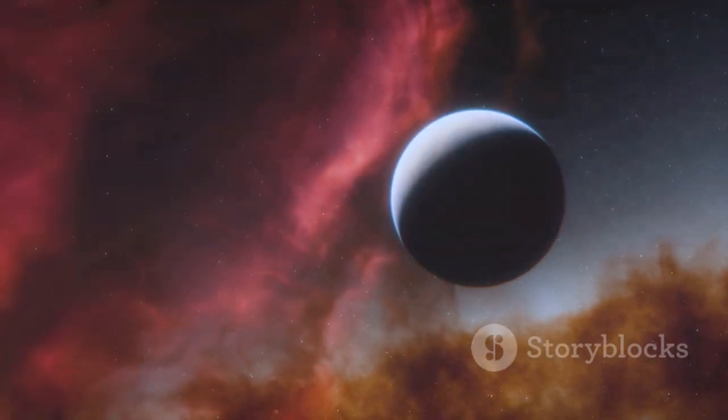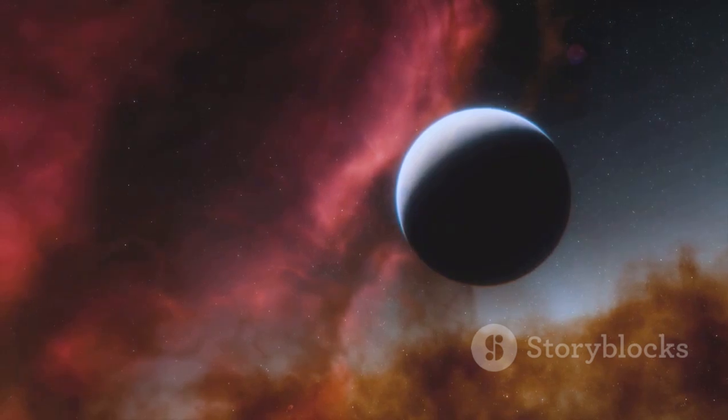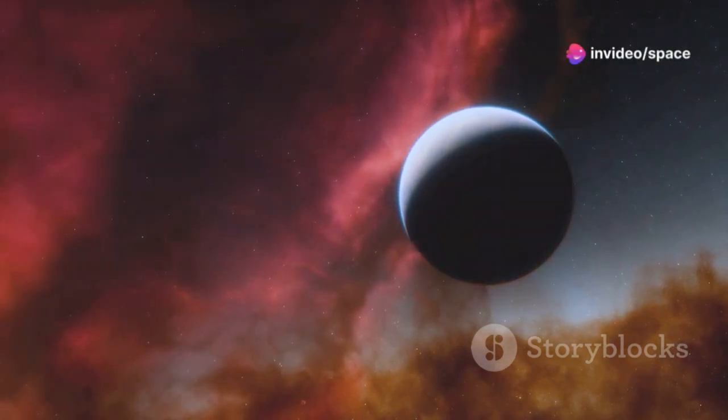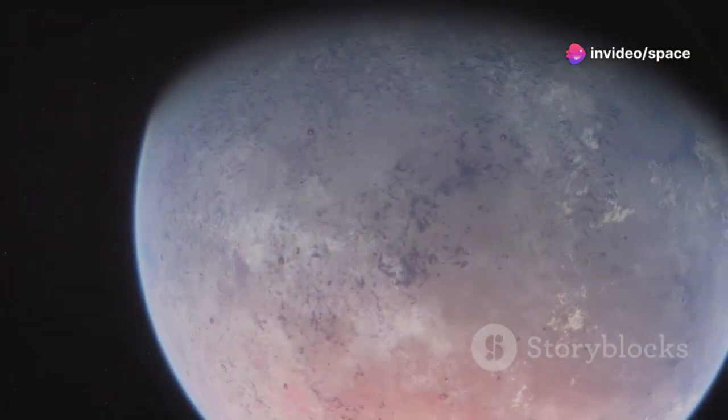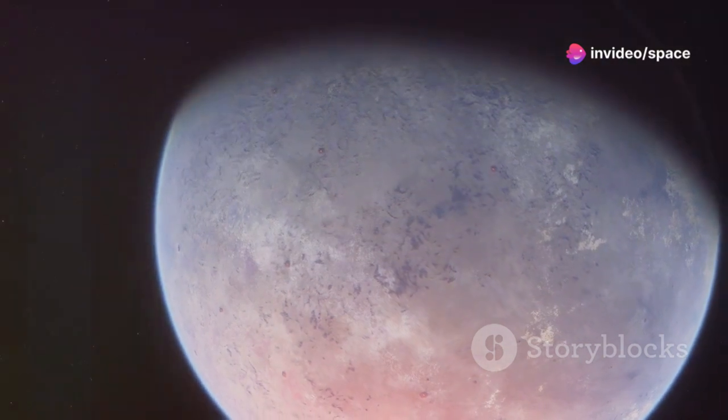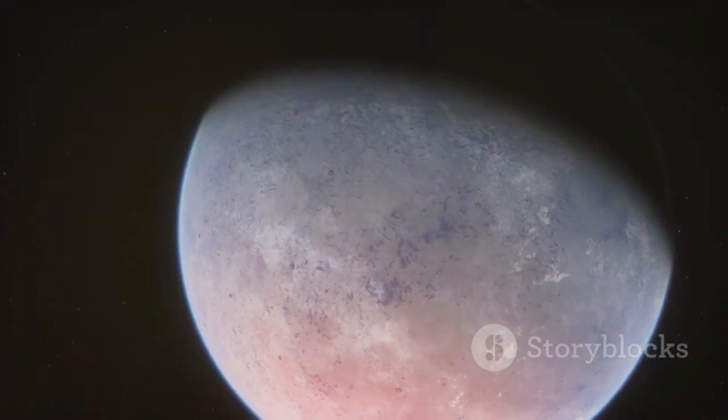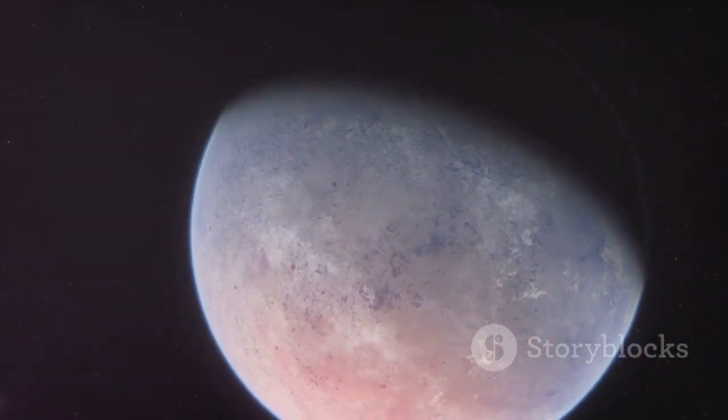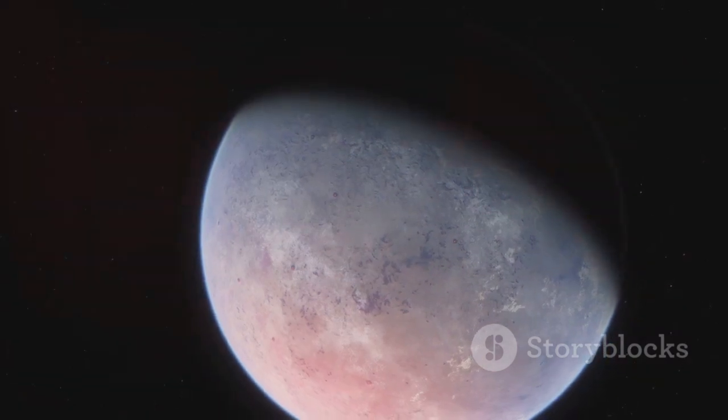Picture a world illuminated by the faint red light of its star, where the principles of physics and the chemistry of life might have developed in both alien and familiar ways. The surface of Proxima b, with its strange red glow, could be a landscape of stark contrasts and unknown wonders.